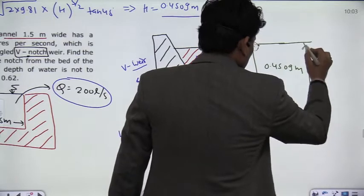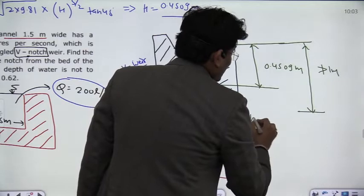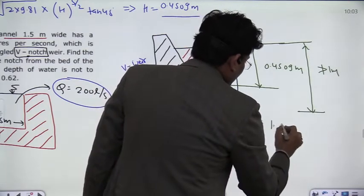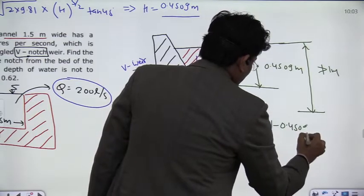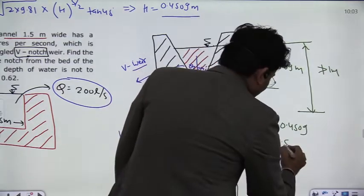This total depth is not more than 1 meter. So from this condition you can remove h from here. Maximum, that is equal to 1 minus 0.4509, that is equal to 0.55 meter.